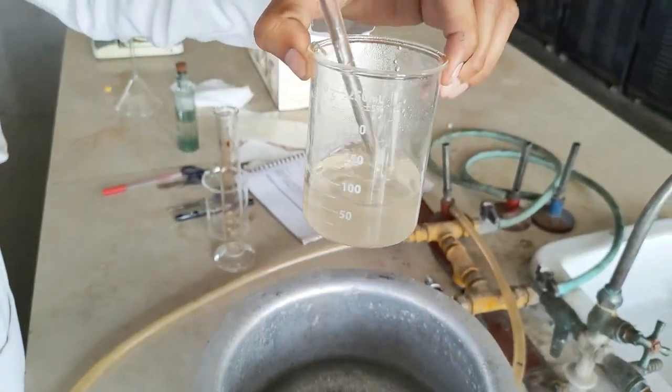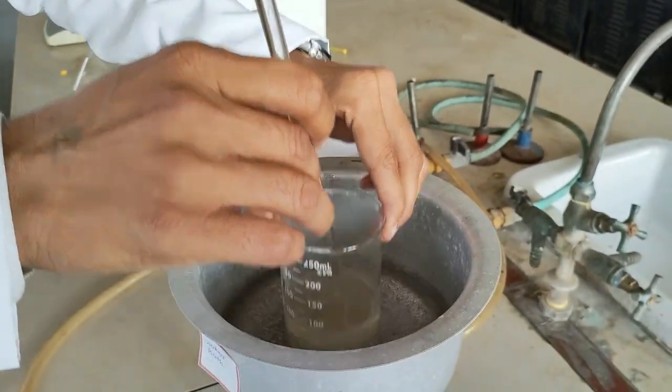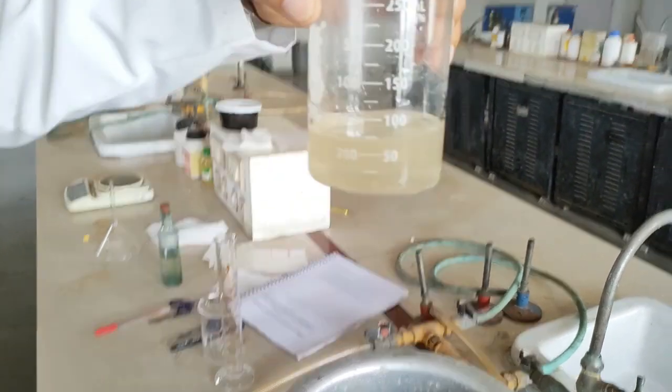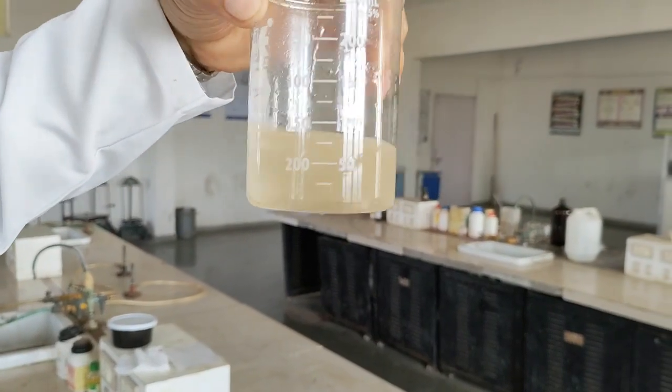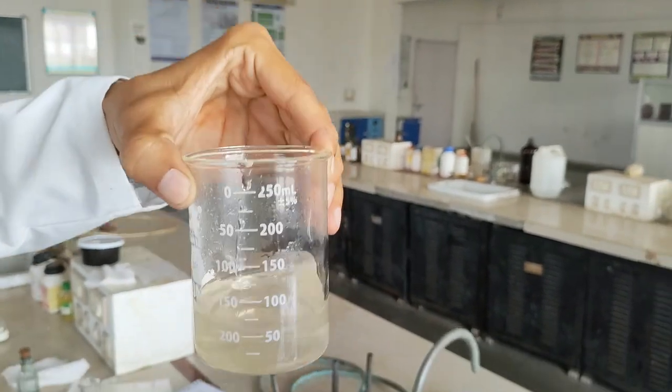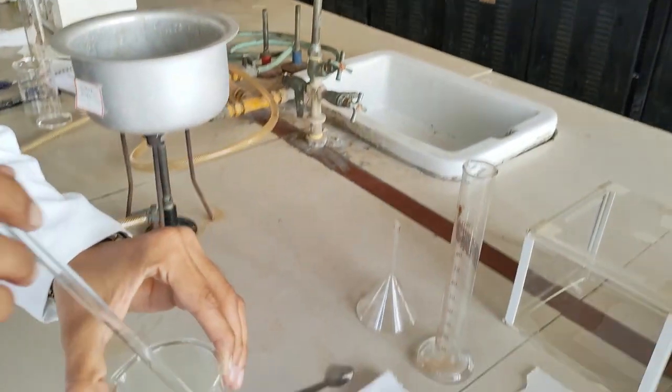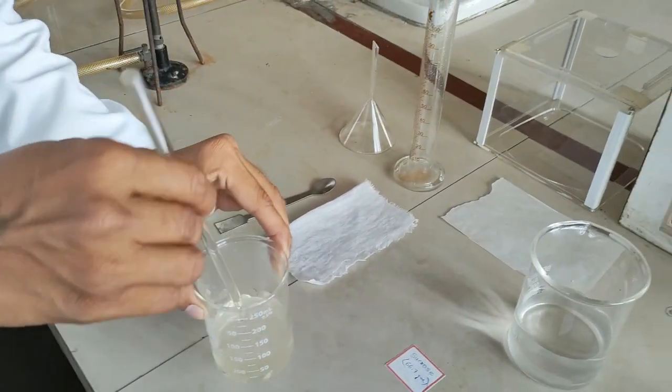Now you can see the sucrose is completely solubilized. There's a little bit of haziness which you can observe due to air bubbles introduced during stirring with the glass rod. Now we are going to filter this solution.